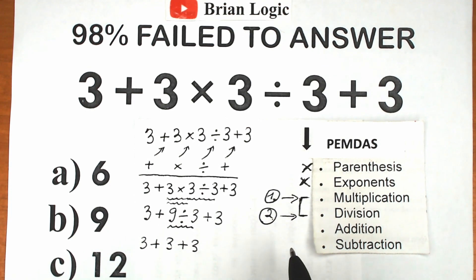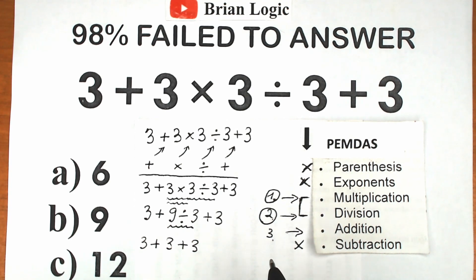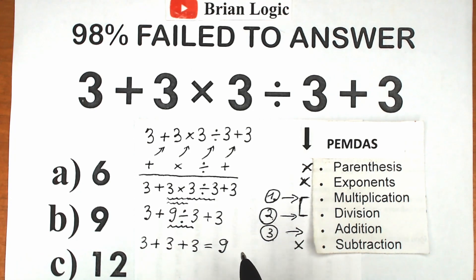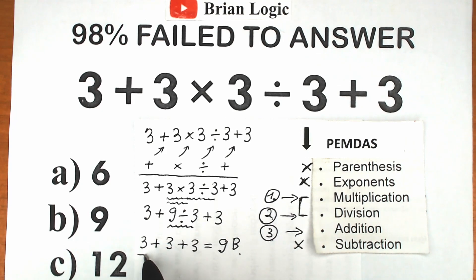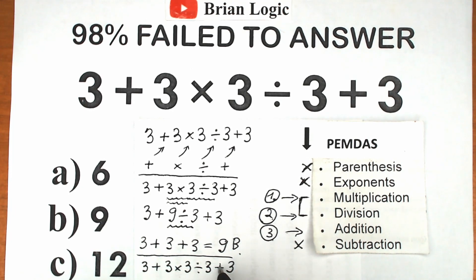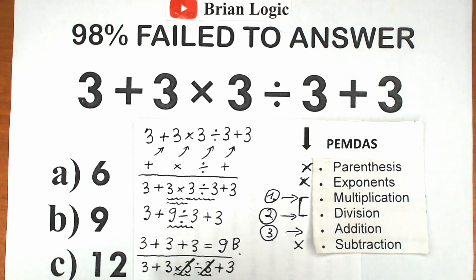The final step: addition and subtraction. We have addition and no subtraction, so: 3 plus 3 plus 3 equals 9. This is our answer — option B. Here's a quick math trick: in the original expression 3 + 3×3÷3 + 3, we have multiplication by 3 and division by 3. Just like plus 5 minus 5 changes nothing, the multiply and divide by 3 cancel each other out. We're left with 3 plus 3 plus 3, which equals 9 — option B.